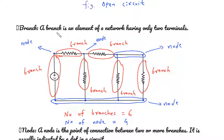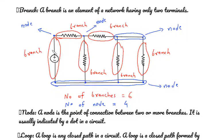What is branch? A branch is an element of a network having only two terminals. Here we can see there are six number of branches. This voltage source is a branch. This resistor is a branch. One, two, three, four, five. So five resistors and one voltage source. Total number of branches are six.